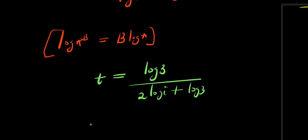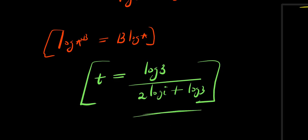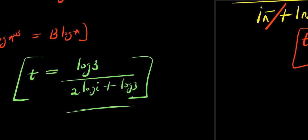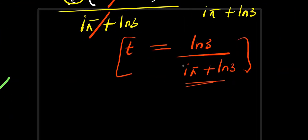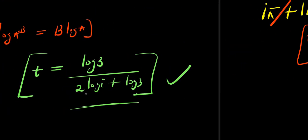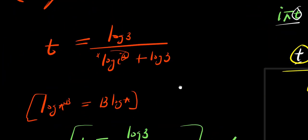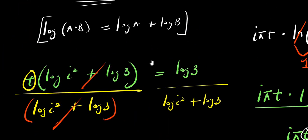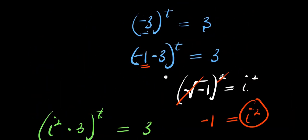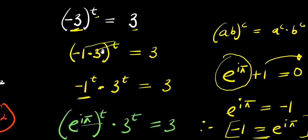Now we have two solutions. The first method gives t equals ln 3 divided by (i·π + ln 3), while the second gives t equals log 3 divided by (2·log i + log 3). Both of these solutions are correct, depending on the method you decide to use. So that is it — please don't forget to subscribe and share this video with your friends. Thank you and goodbye.